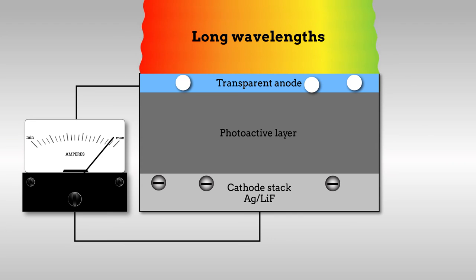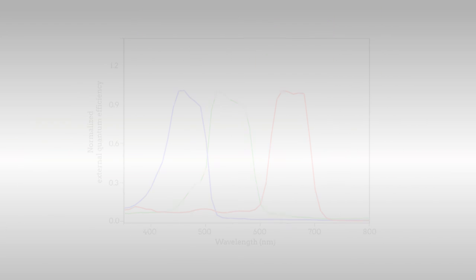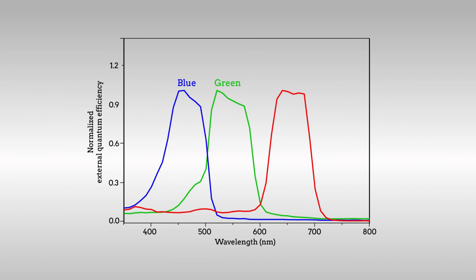Photodiodes sensitive only to red light were produced using this approach. To create photodiodes sensitive to green or blue light, a slightly different organohalide perovskite or lead halide film containing a polymer additive was used.